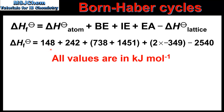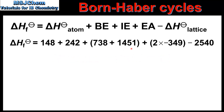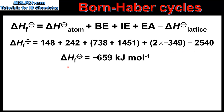So the enthalpy of formation equals 148 plus 242 plus (738 + 1451) plus 2 × (−349) minus 2540, which gives us an enthalpy change of formation for Magnesium Chloride of −659 kJ per mole.